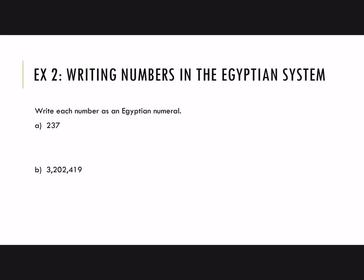Now let's try going the other direction — writing each number as an Egyptian numeral. For 237: two hundreds would be two scrolls, three heel bones to represent 30, and then seven vertical staffs. These don't have to be written all in a line — you can stack them if you run out of room.